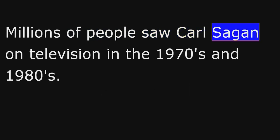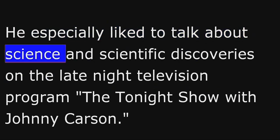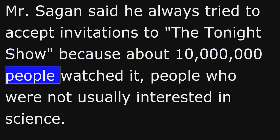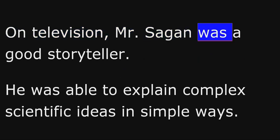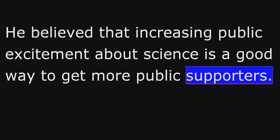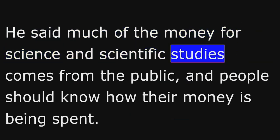Millions of people saw Carl Sagan on television in the 1970s and 1980s. He especially liked to talk about science and scientific discoveries on the late-night television program, The Tonight Show with Johnny Carson. Mr. Sagan said he always tried to accept invitations to The Tonight Show because about 10 million people watched it, people who were not usually interested in science. On television, Mr. Sagan was a good storyteller. He was able to explain complex scientific ideas in simple ways. He believed that increasing public excitement about science is a good way to get more public supporters. He said much of the money for science and scientific studies comes from the public, and people should know how their money is being spent.